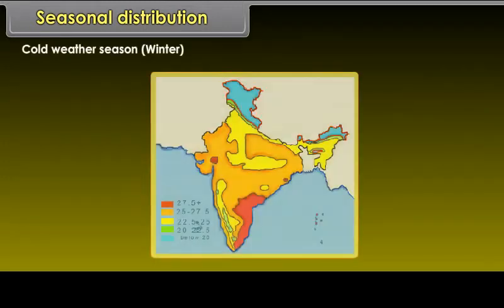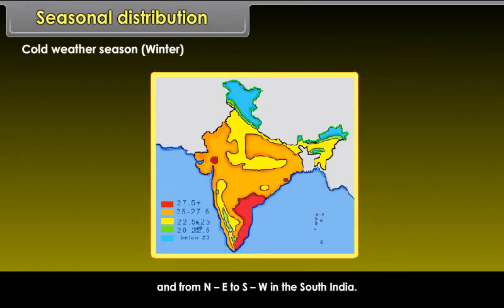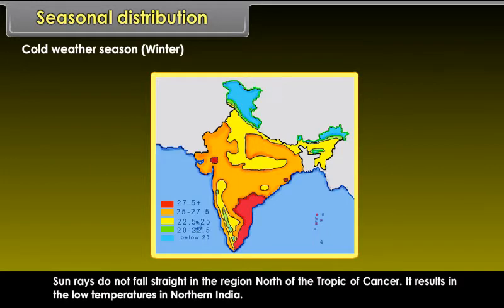During the cold weather season (winter), cold dry winds blow from the northwest to the southeast in north and northwest India, and from northeast to southwest in south India. Sun rays do not fall straight in the region north of the Tropic of Cancer, which results in low temperatures in northern India.